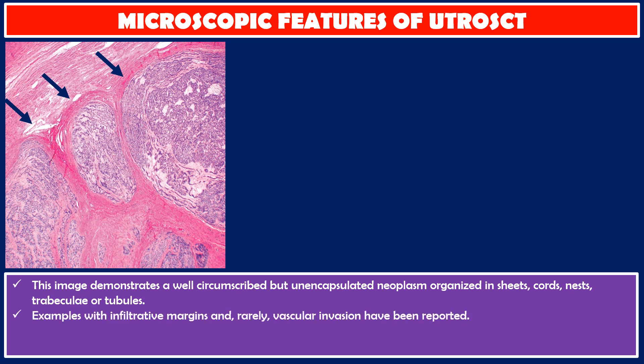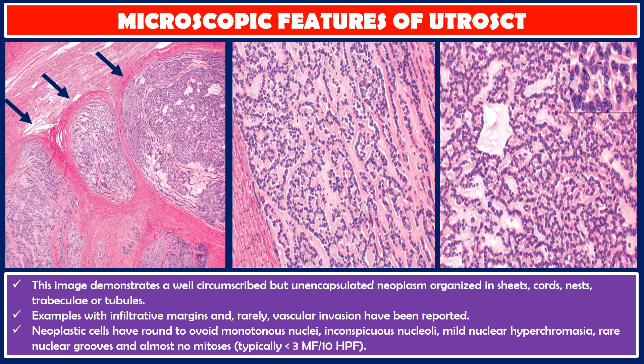Examples with infiltrative margins and rarely vascular invasion have been reported. Neoplastic cells have round to ovoid, monotonous nuclei, inconspicuous nucleoli, mild nuclear hyperchromasia, rare nuclear grooves, and almost no mitosis — typically less than 3 mitotic figures per 10 high-power fields.